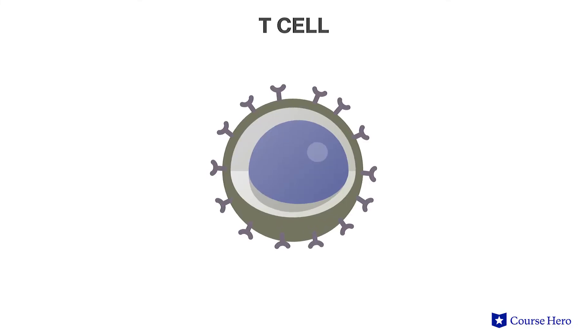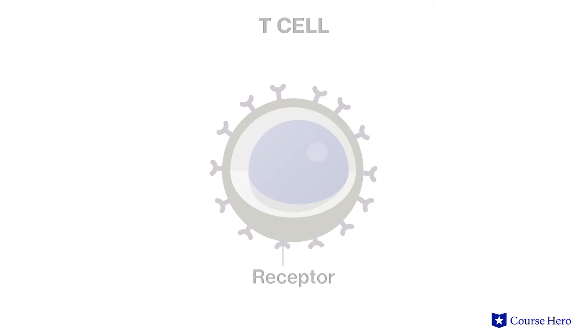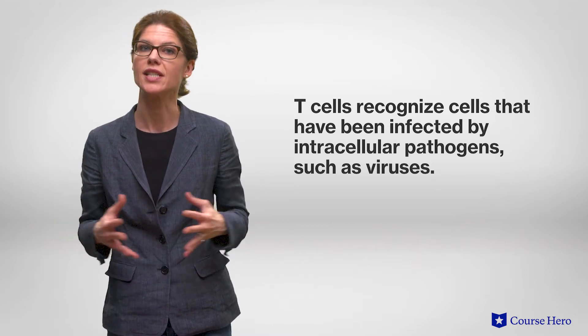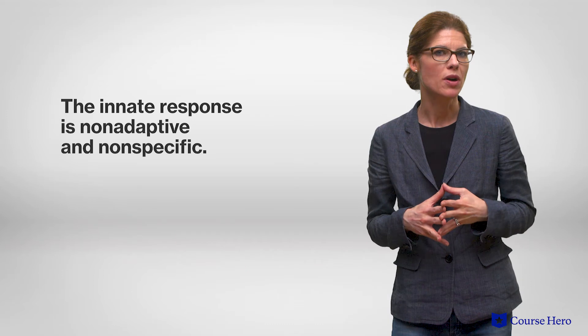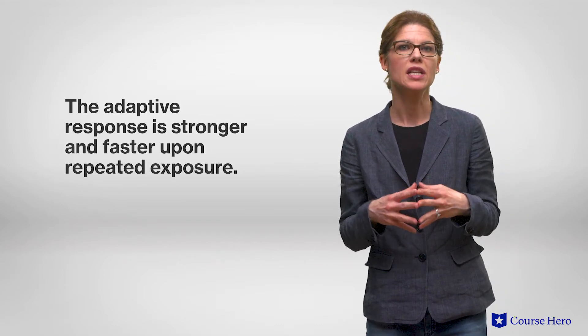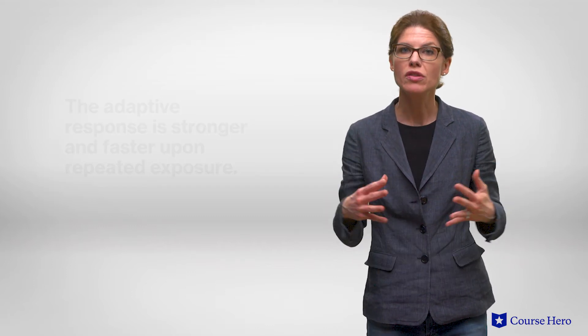T cells, like B cells, also have a receptor that recognizes antigens. However, these are presented to the T cells by cells that have been infected. So unlike B cells, which are effective against extracellular pathogens such as most bacteria, T cells are most effective against intracellular pathogens such as viruses. Unlike the innate response, which is non-adaptive and non-specific, the adaptive immune response is stronger and faster upon repeated exposure to the same pathogen due to the generation of memory cells during an immune response.